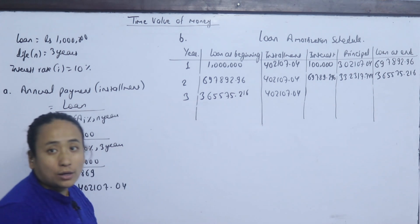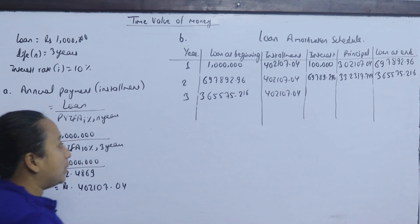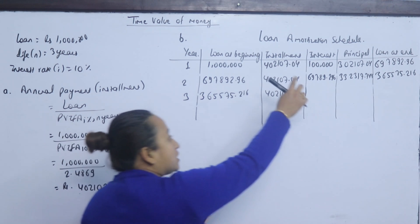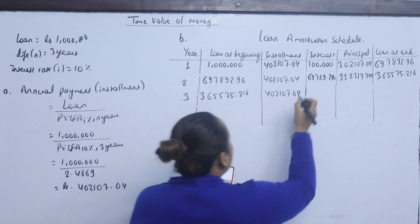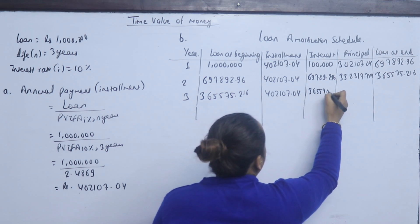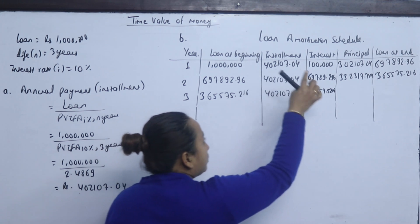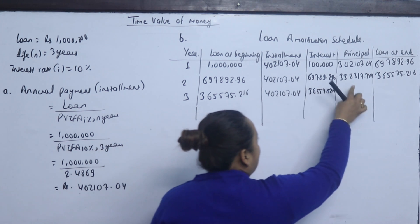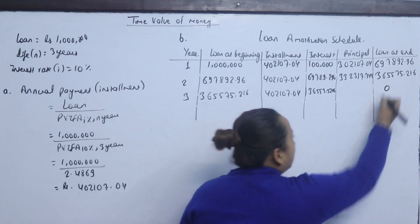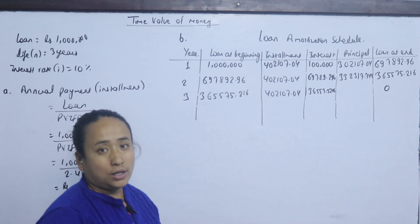For year 3, the loan at the beginning is 365,575.216. The interest is 10% of 365,575.216, which equals 36,557.5216. The principal portion equals the installment minus the interest. After year 3, the loan at the end should be 0, as it is a 3-year loan.